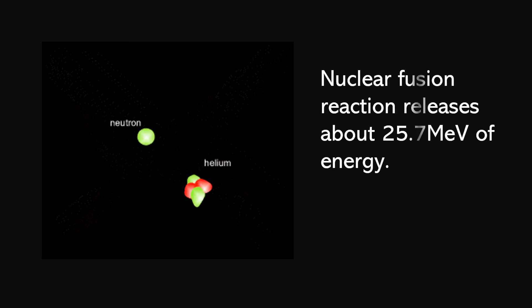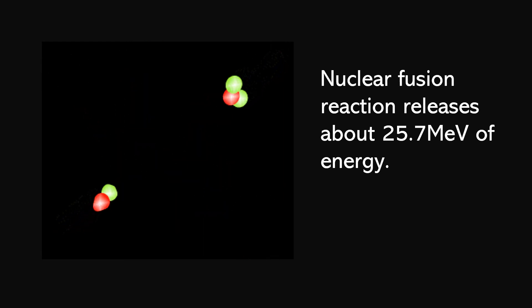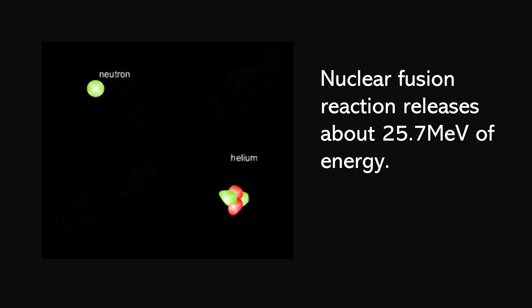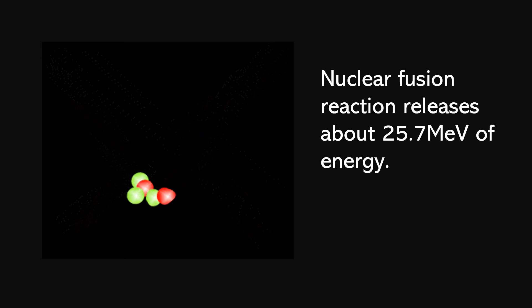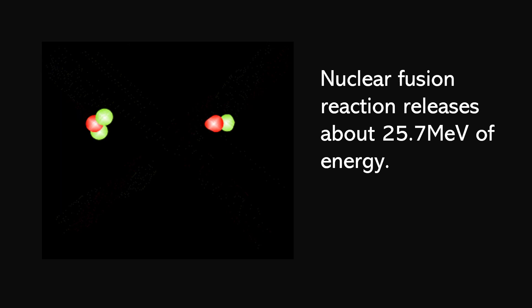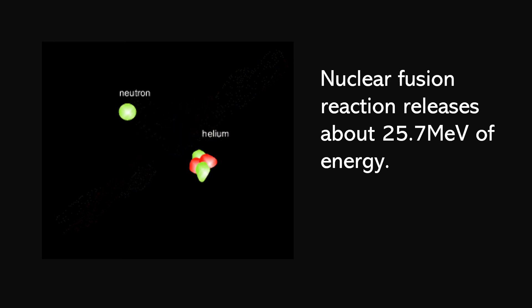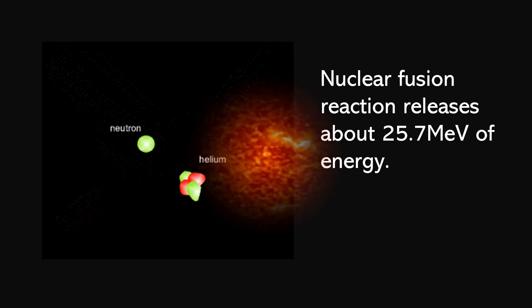Let's see the animation for nuclear fusion reaction: two isotopes of hydrogen combine together, and helium and a neutron are released. Like nuclear fission reaction, nuclear fusion reaction is also a very massive reaction that releases a large amount of energy — about 25.7 mega electron volt (MeV) of energy is released. One important difference is that there is no chain reaction in fusion. In fusion, we have a simple two-stage reaction with no intermediate stage and no chain reaction.